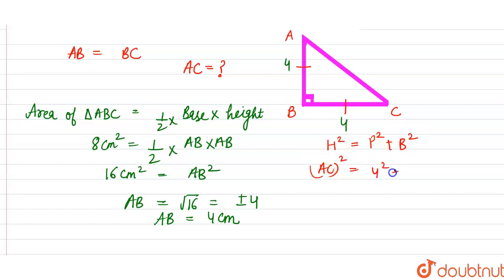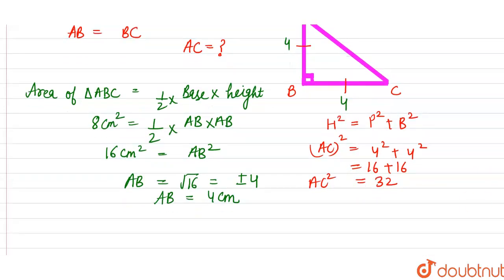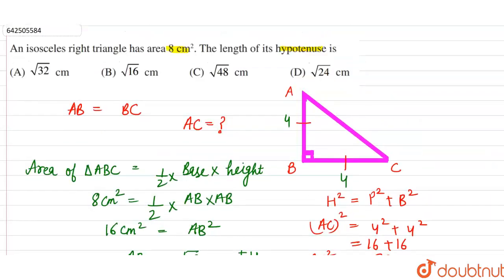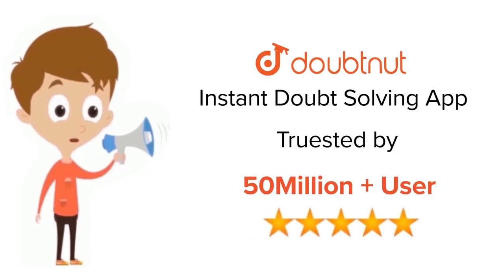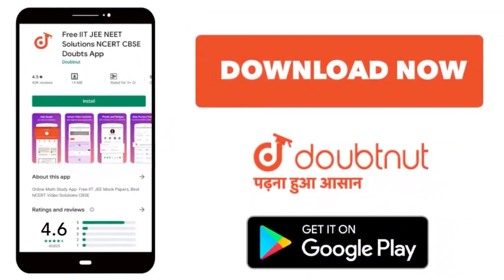AC squared equals 16 plus 16, which is 32. Therefore AC equals under root 32. From the given options, the correct answer is option A. For class 6 to 12th, IIT JEE and NEET level, trusted by more than 5 crore students — download the DoubtNet app today.